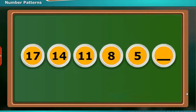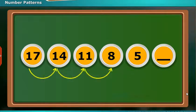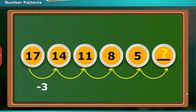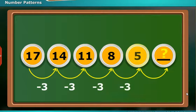In another example, here is a number pattern. In this number pattern, start at seventeen and subtract three each time. Seventeen minus three is equal to fourteen. Fourteen minus three is equal to eleven. Keep subtracting each time. The next number will be five minus three which is equal to two. This number pattern is a decreasing number pattern by the rule of subtraction of three.